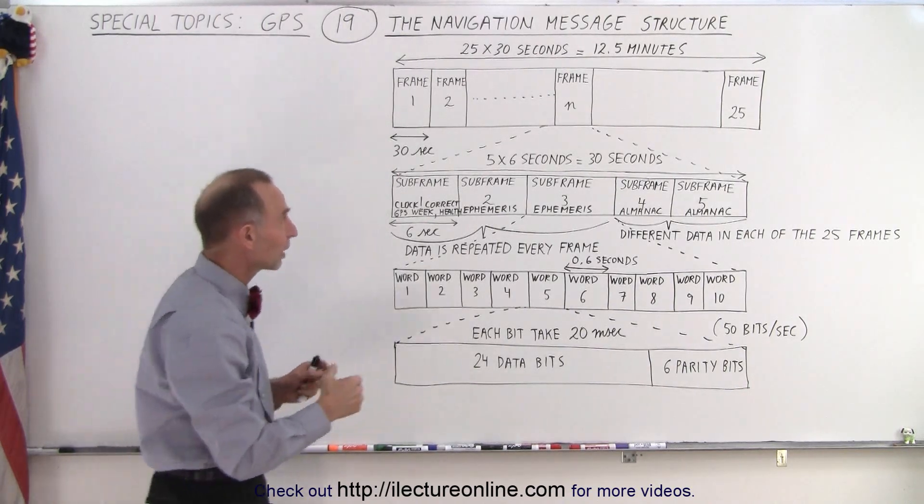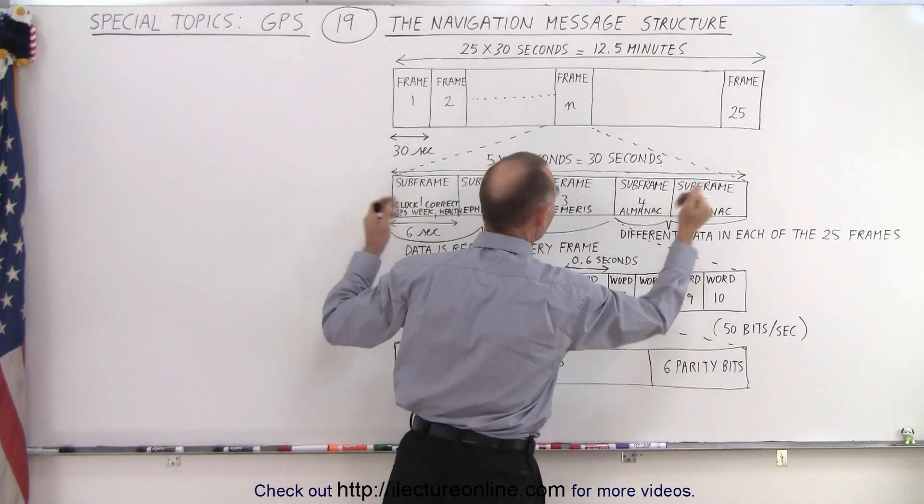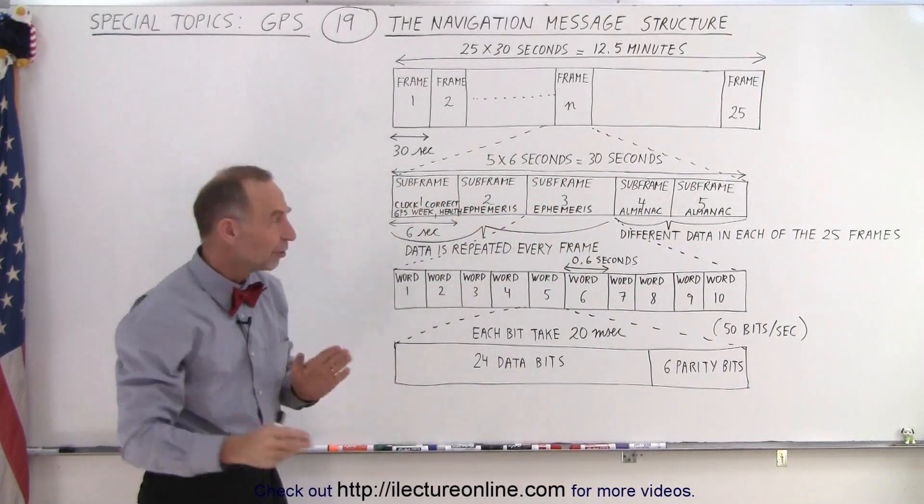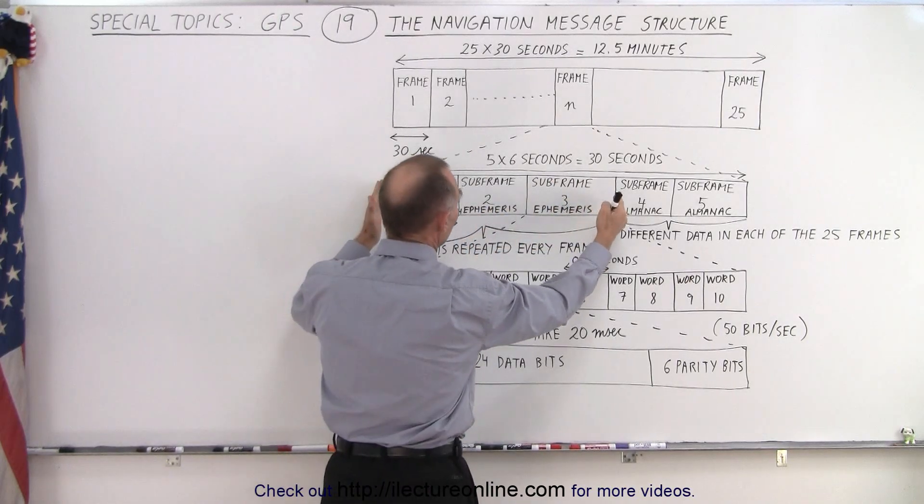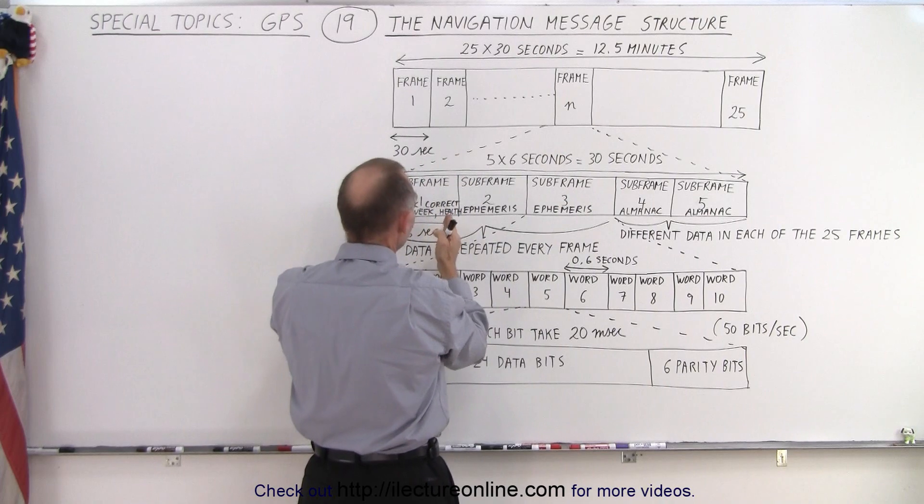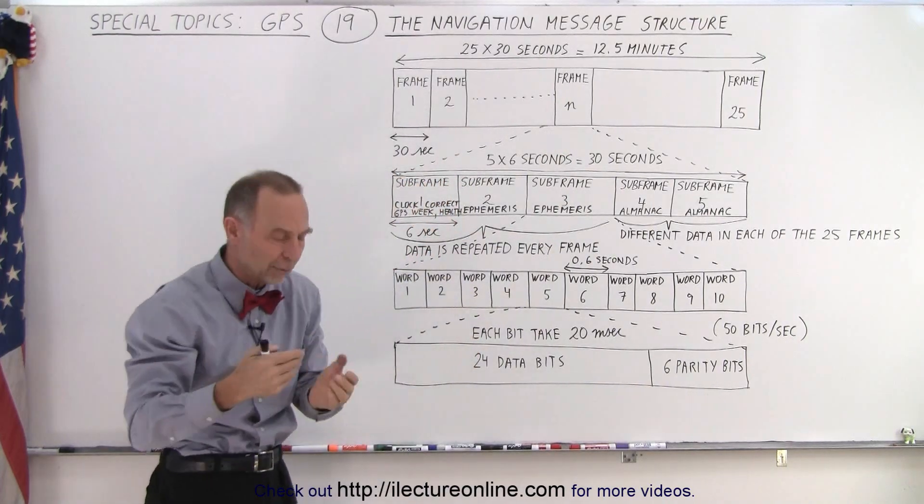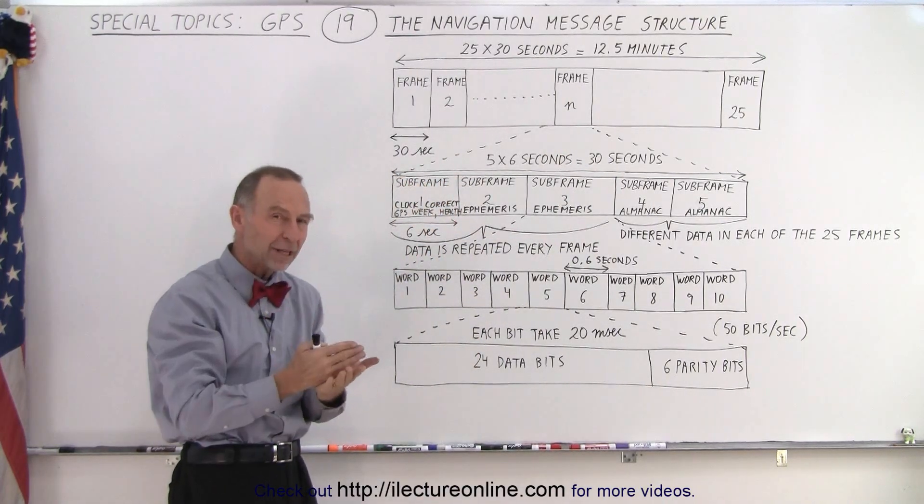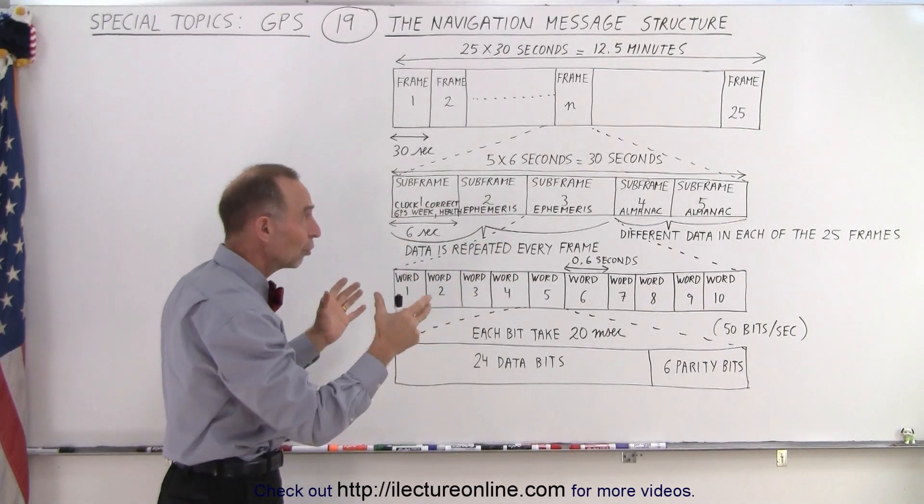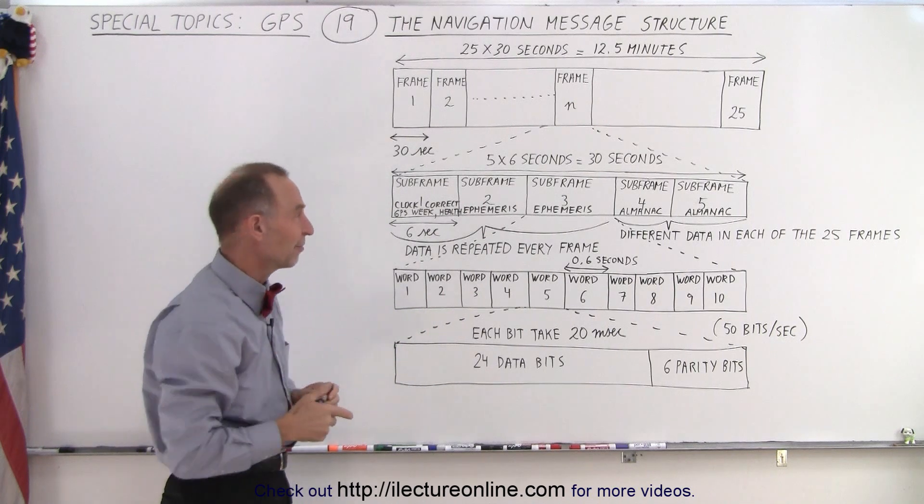Because when we drill down, if you look at what's contained within a single frame, there's five subframes. Now the first three subframes, well notice if it takes 30 seconds to send a frame, then it takes six seconds for each of the subframes. So on the minute, and on the half minute, every 30 seconds, a frame is sent.